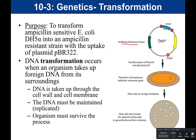Historically, insulin was produced by isolating it from cadavers, which was limiting, or from animal sources such as cattle or pigs. The problem with animal insulin is that it's not human insulin, and patients sometimes had reactions against it. The best solution was to give patients human insulin, which was accomplished through recombinant DNA technology.